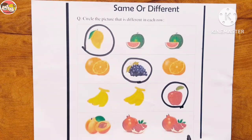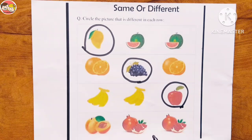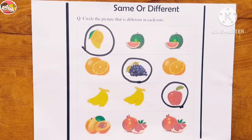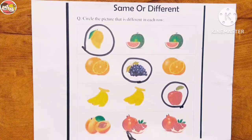Now look at the next row and tell me which one is different. This is a peach and these are pomegranates. The pomegranates are the same fruits. The peach is different — it is pinkish-yellow in color and has a different appearance from the pomegranates. So the pomegranates are the same and the peach is different; make a circle on it.